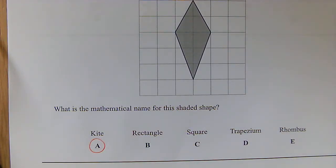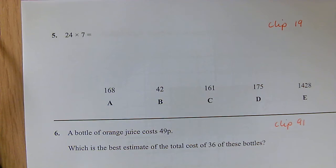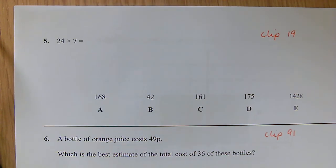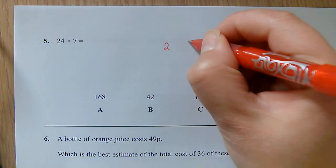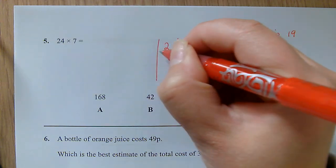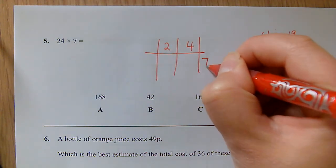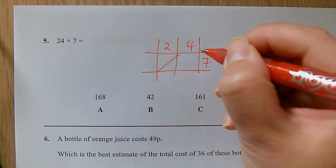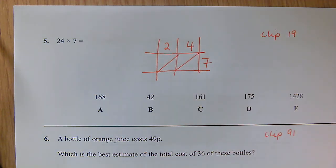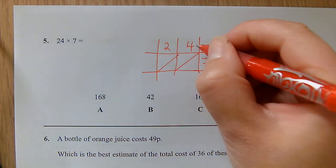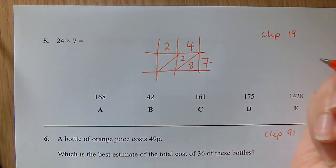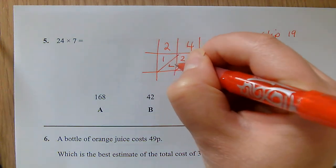Question 5: We're looking at multiplying up integers. Here we can do our napier's now. If you wish to do column method or grid method, that's absolutely fine as well. So 4 multiplied by 7 to give us 28, 2 multiplied by 7 is 14, so we end up with 168.